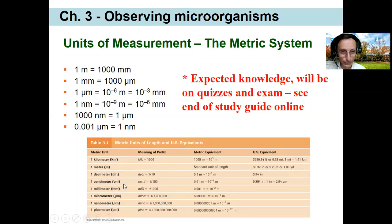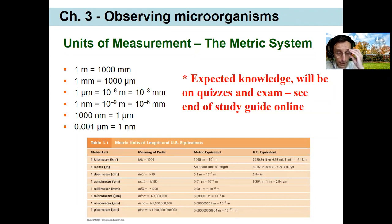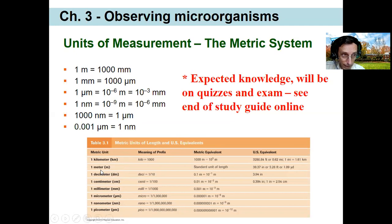Ten of the smallest units on a ruler are a centimeter. 2.4 centimeters equals one inch, and a hundred centimeters equal a meter. A thousand meters is one kilometer. You should know these terms and be able to convert between one and another. You should also know the prefixes and then put the prefix with other units of measurement. For weight, we have grams instead of meters. For volume, we have liters instead of meters. So you should know these terms with those other units too.